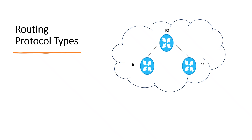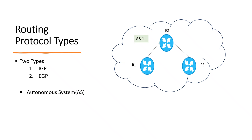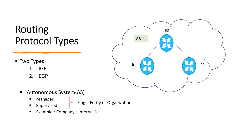There are two types of routing protocols: IGP and EGP. Before we discuss the differences between IGP and EGP, we need to understand an important term — Autonomous System, or AS. An autonomous system is a network or a collection of networks that are all managed and supervised by a single entity or organization, such as a company's internal network or an ISP network.